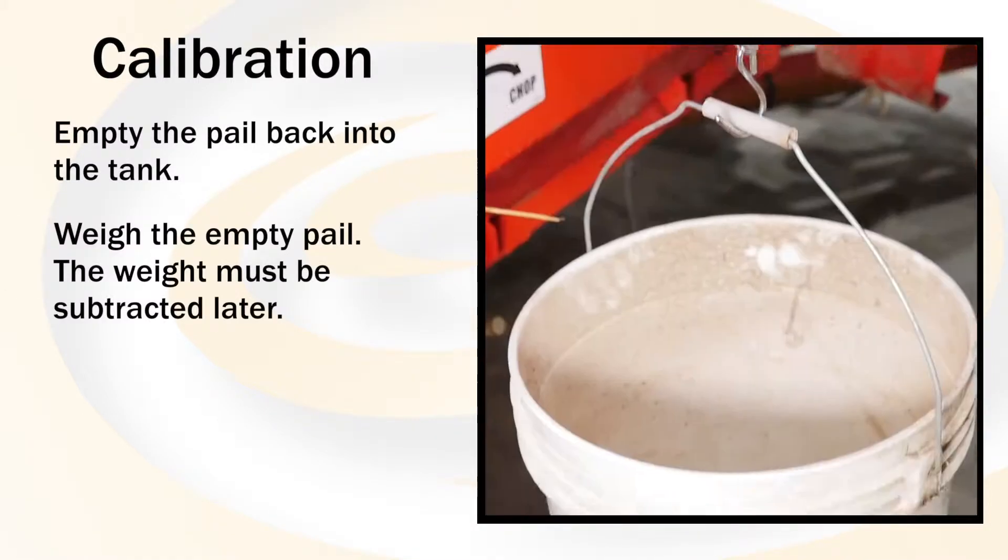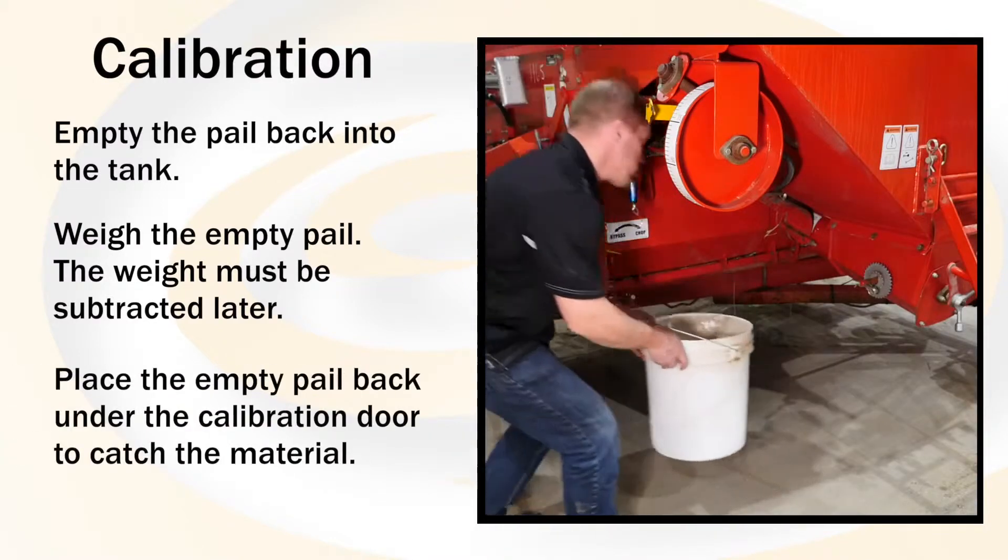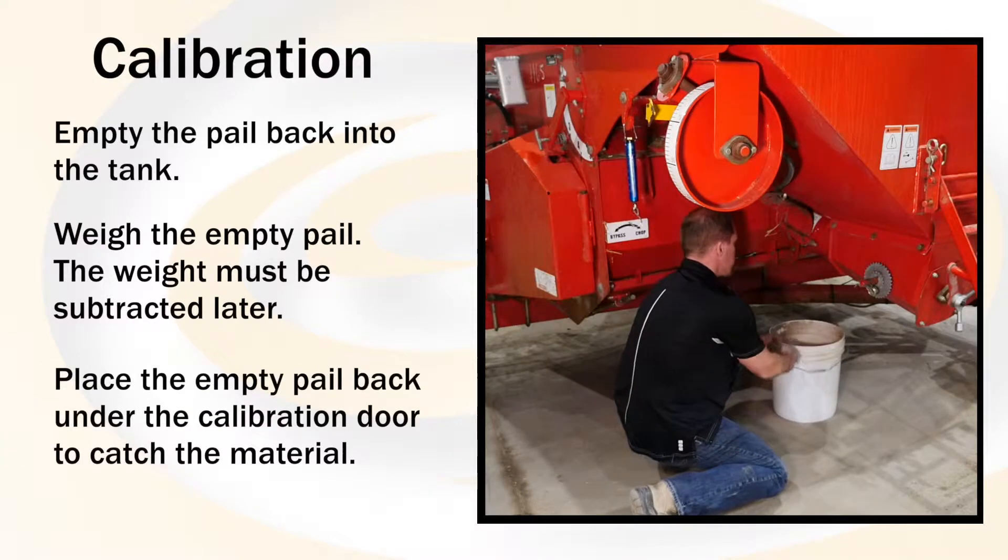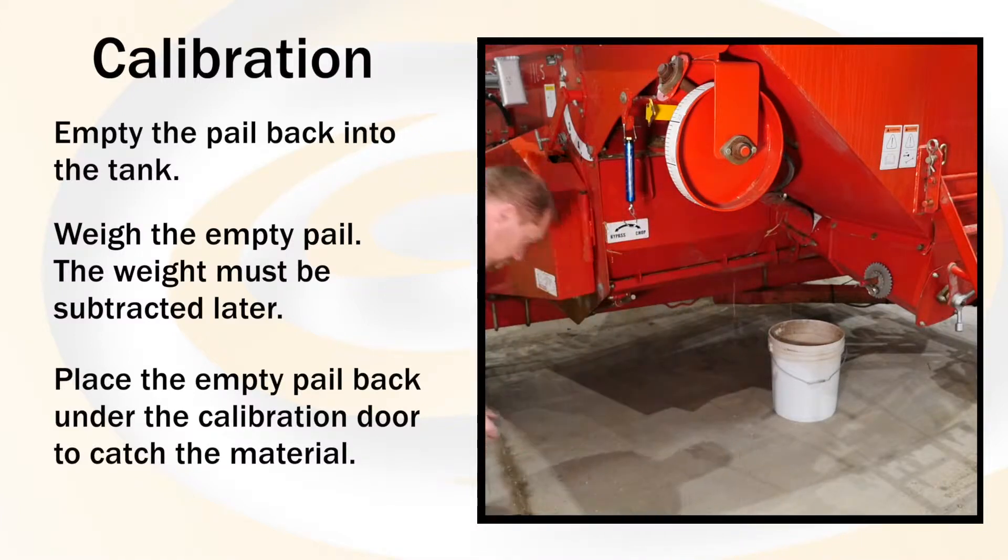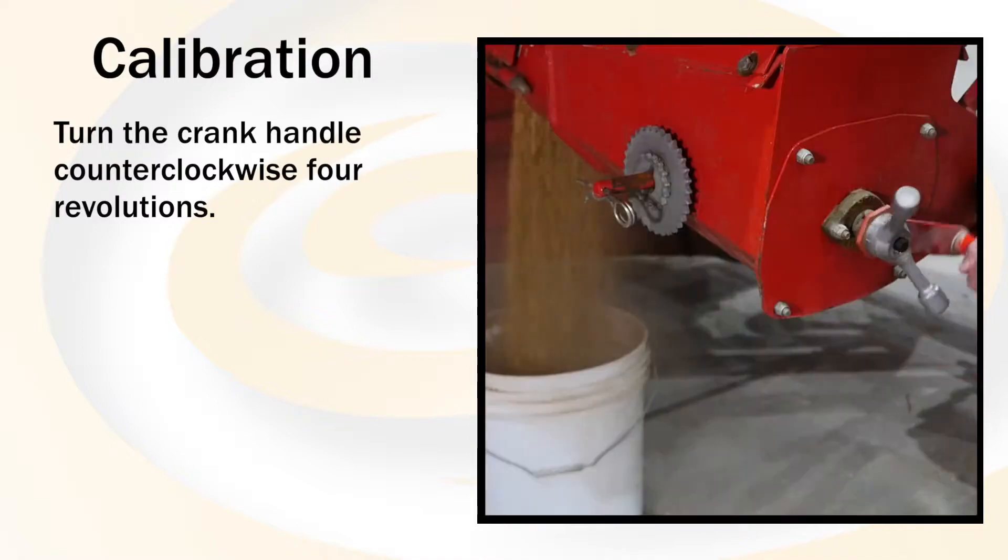Weigh the empty pail as the weight must be subtracted later. Place the empty pail under the calibration door so that the material will be caught. Turn the crank handle counter clockwise 4 revolutions.